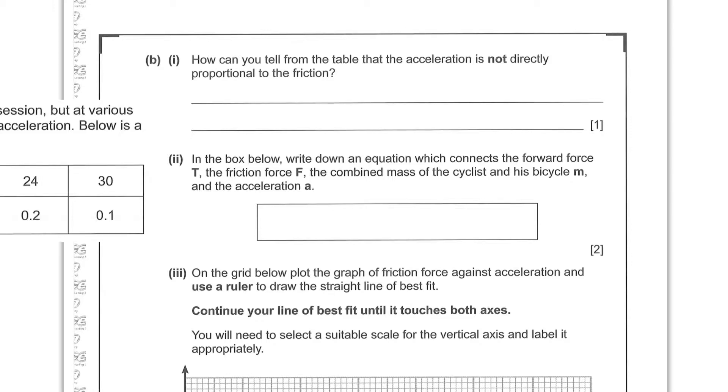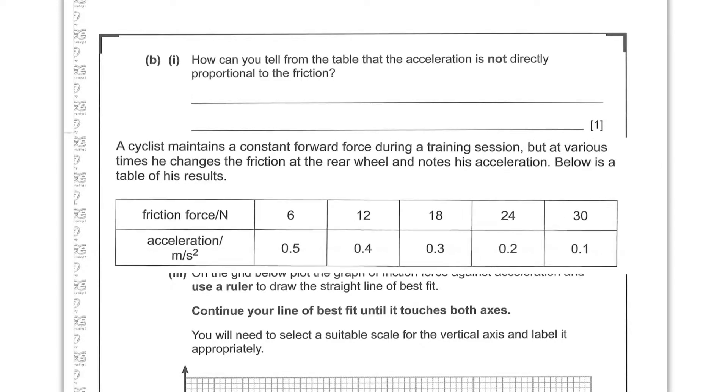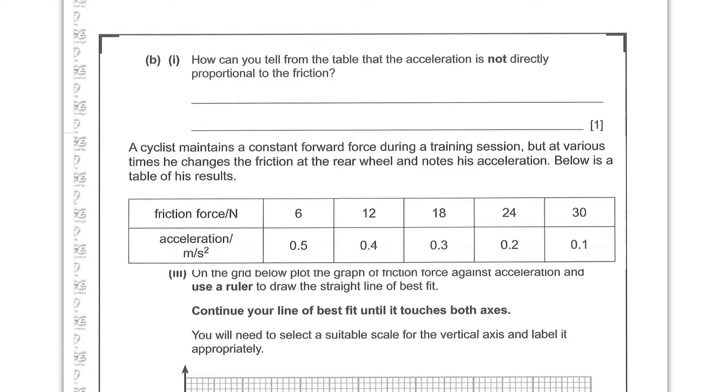Part B1. How can you tell from the table that the acceleration is not directly proportional to the friction? So I've brought this table forward so we can have a look at it here. So we're being asked to look and see how these numbers aren't proportional. Now you can see this is going up in sixes, so it's going up by a set amount. These numbers are actually going down. If these are proportional then the acceleration should go up by a set amount. If these have gone up by equal increases we would expect the acceleration to go up by equal increases.